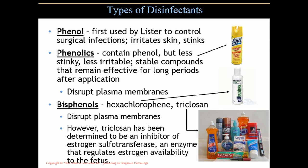If estrogen is not available, fetal development cannot proceed properly, and some aspects will not proceed the way they should. The issue is that triclosan can be absorbed into a pregnant woman's bloodstream, passed on to the developing fetus, and then interfere by inhibiting estrogen sulfotransferase. This was determined by a number of Japanese scientists in the early 2000s.